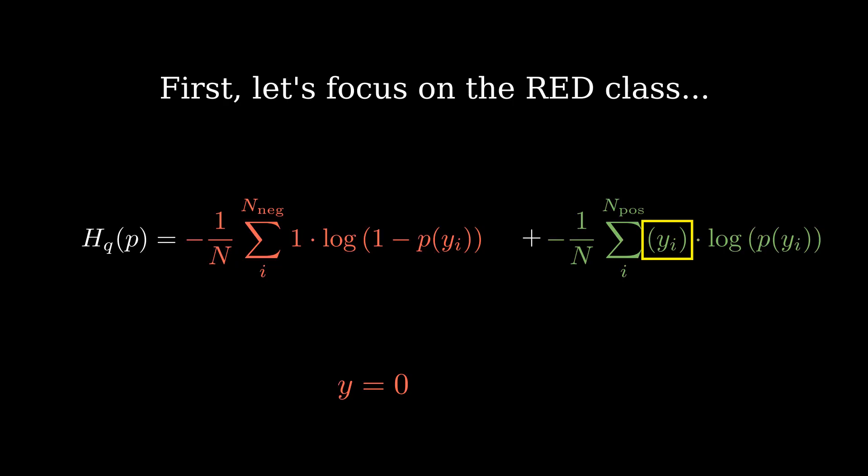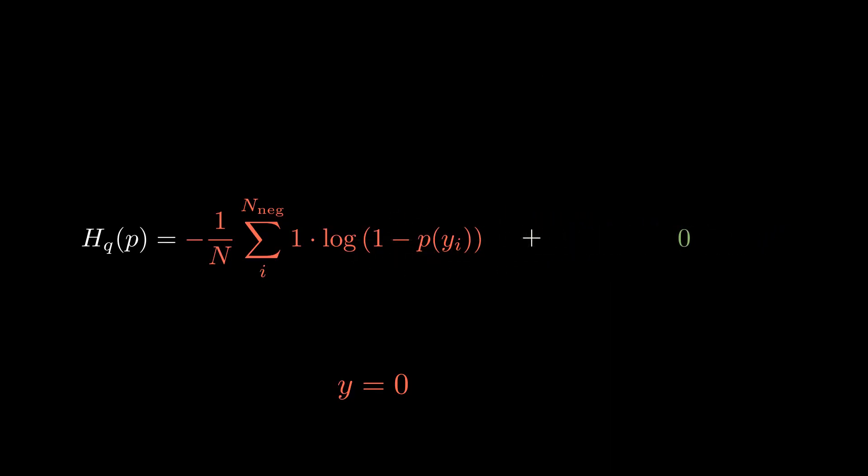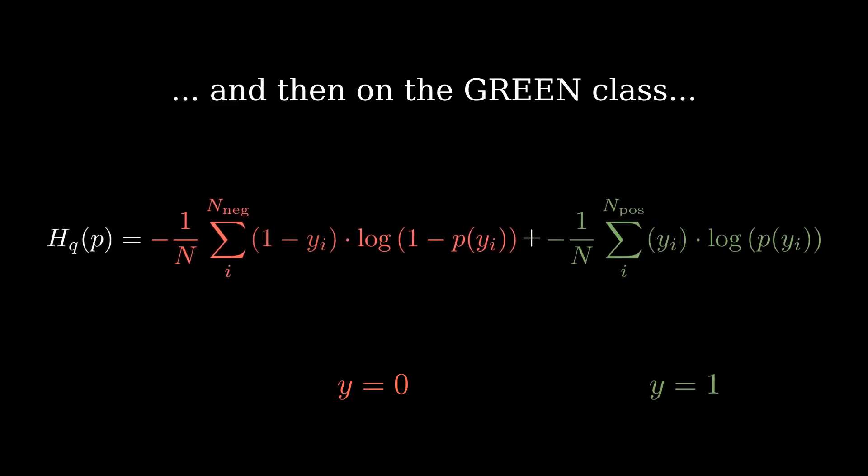Moreover, for every red point, the right-hand side of equation is going to be 0. Now, let's turn our attention to the positive, or green class.